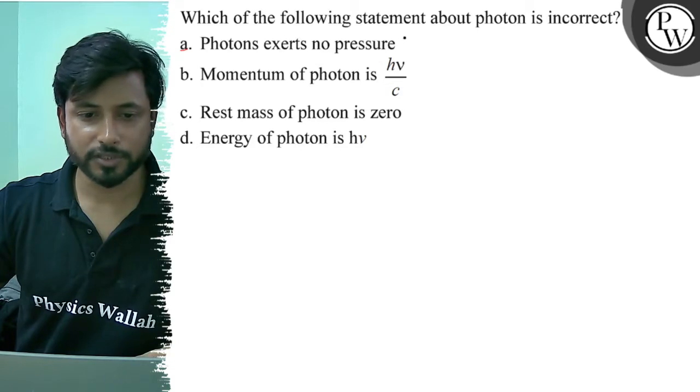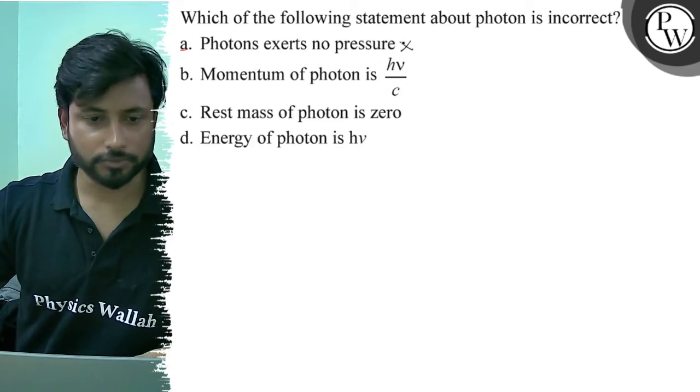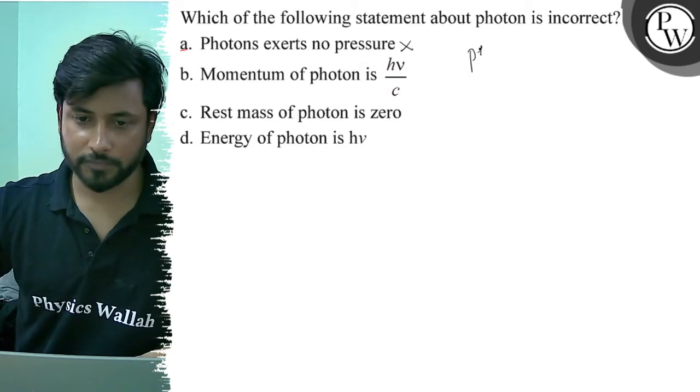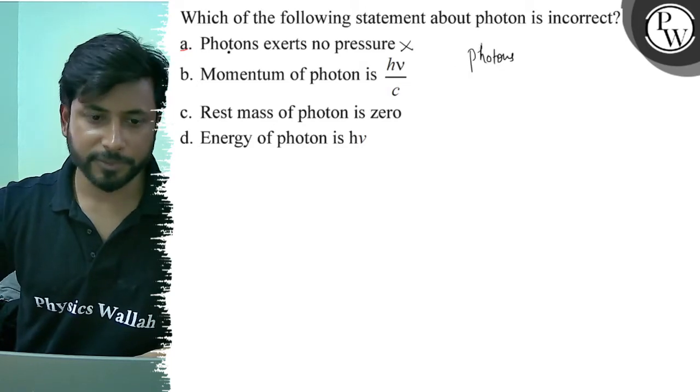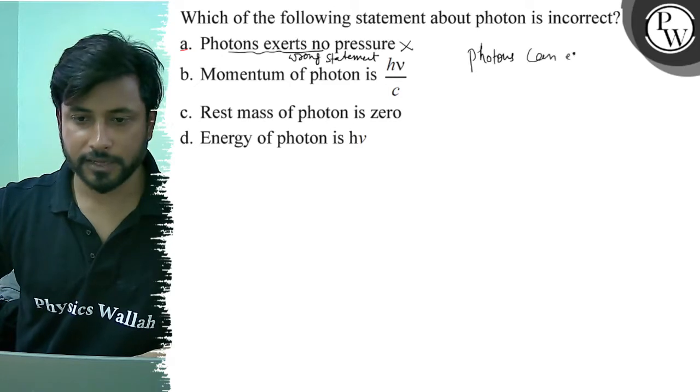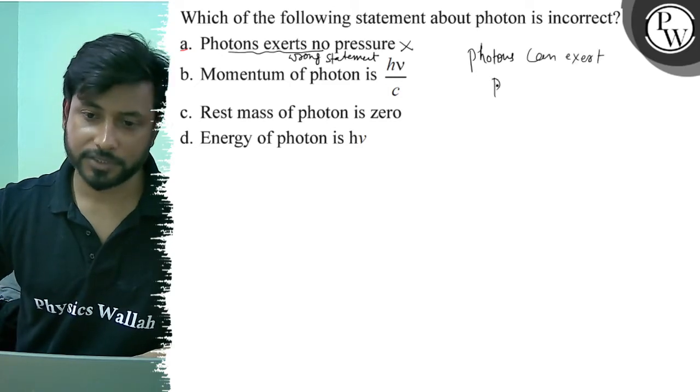Option A, photons exert no pressure. This option is wrong. Photons exert pressure. Because photons can exert pressure.